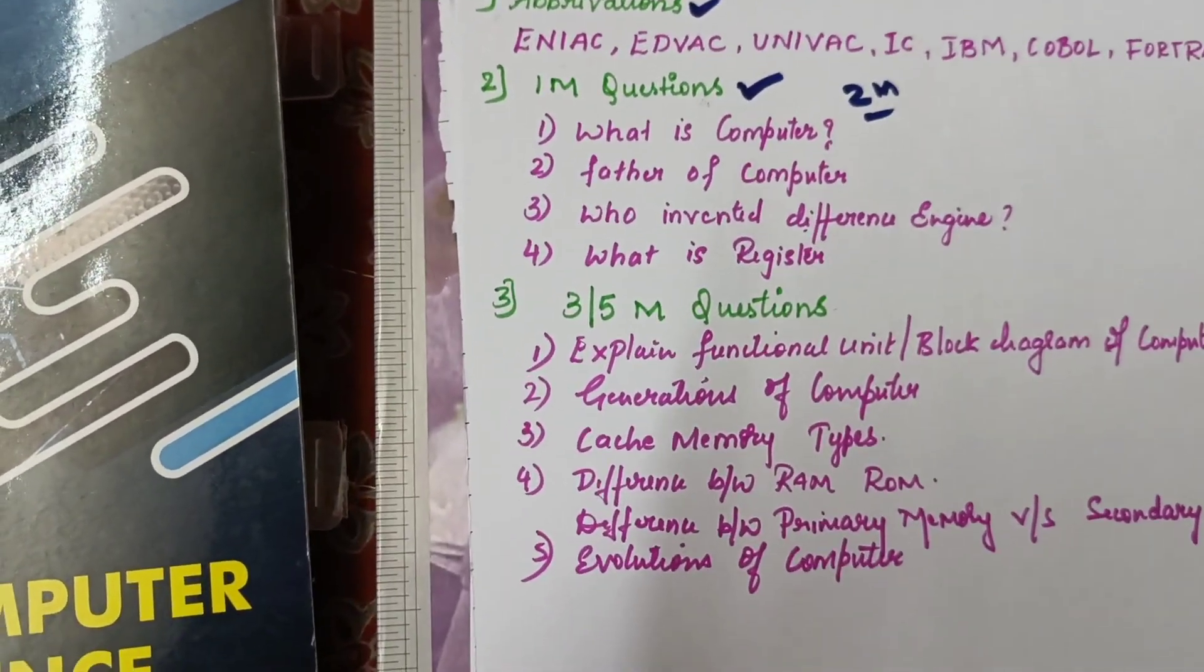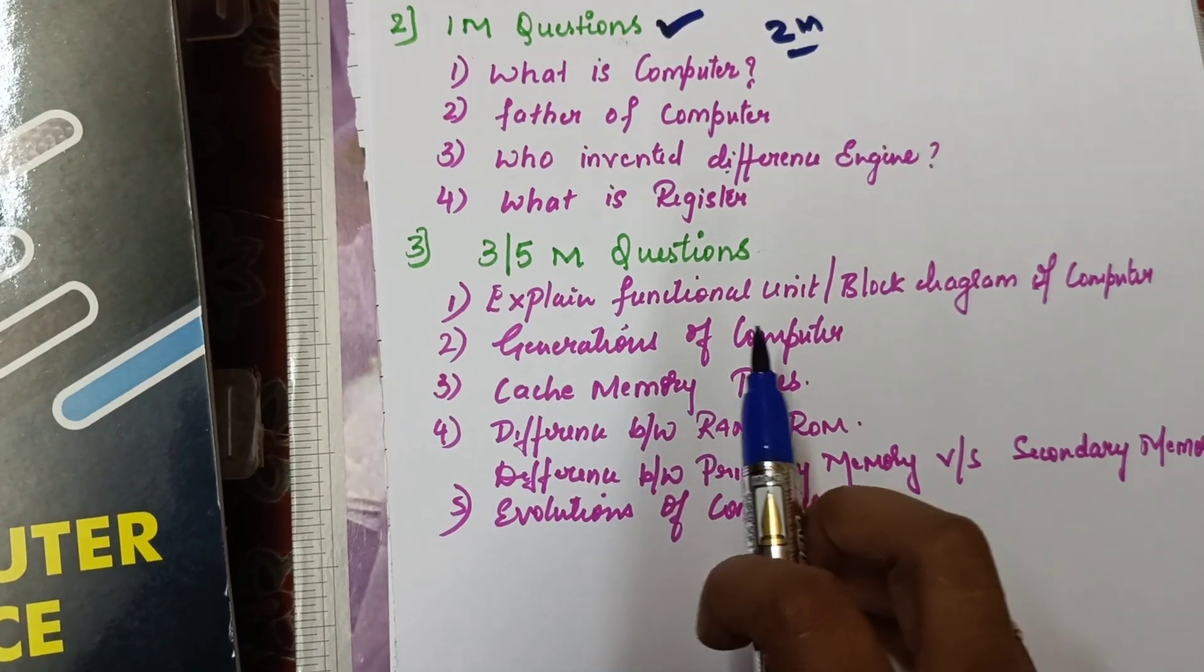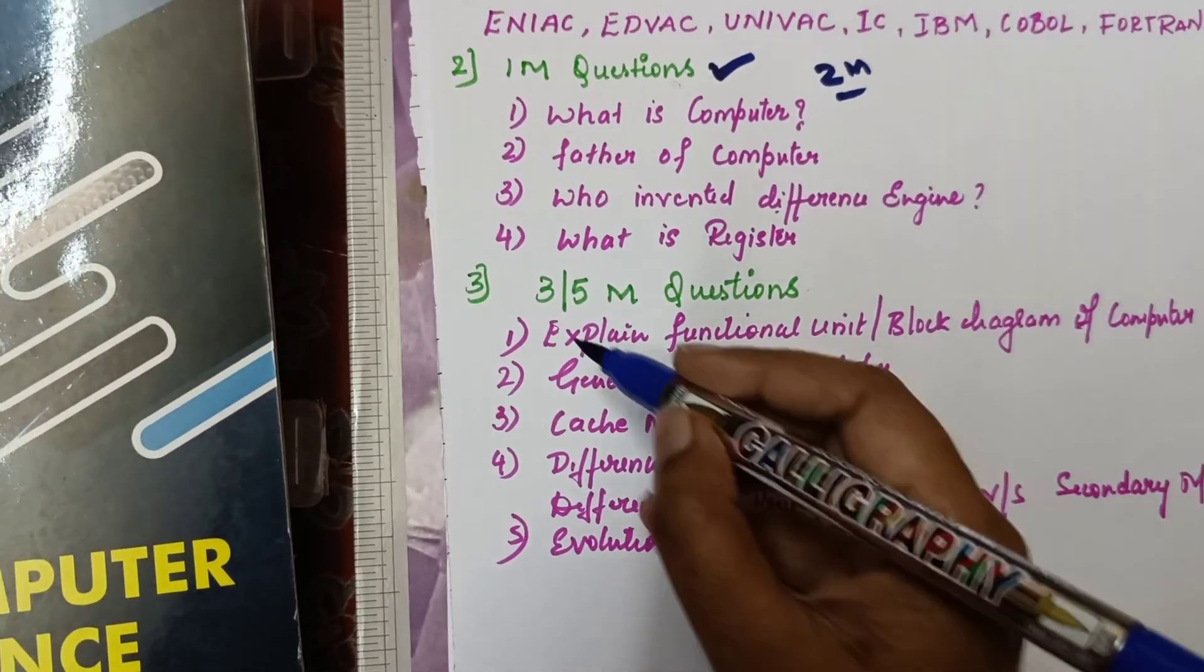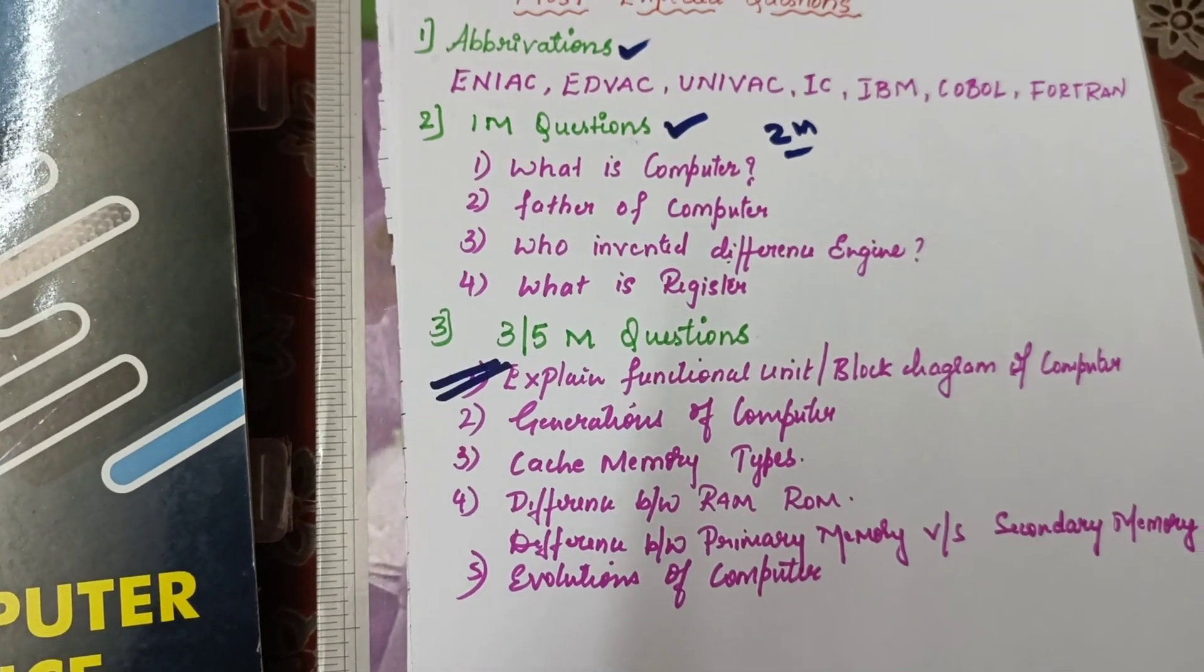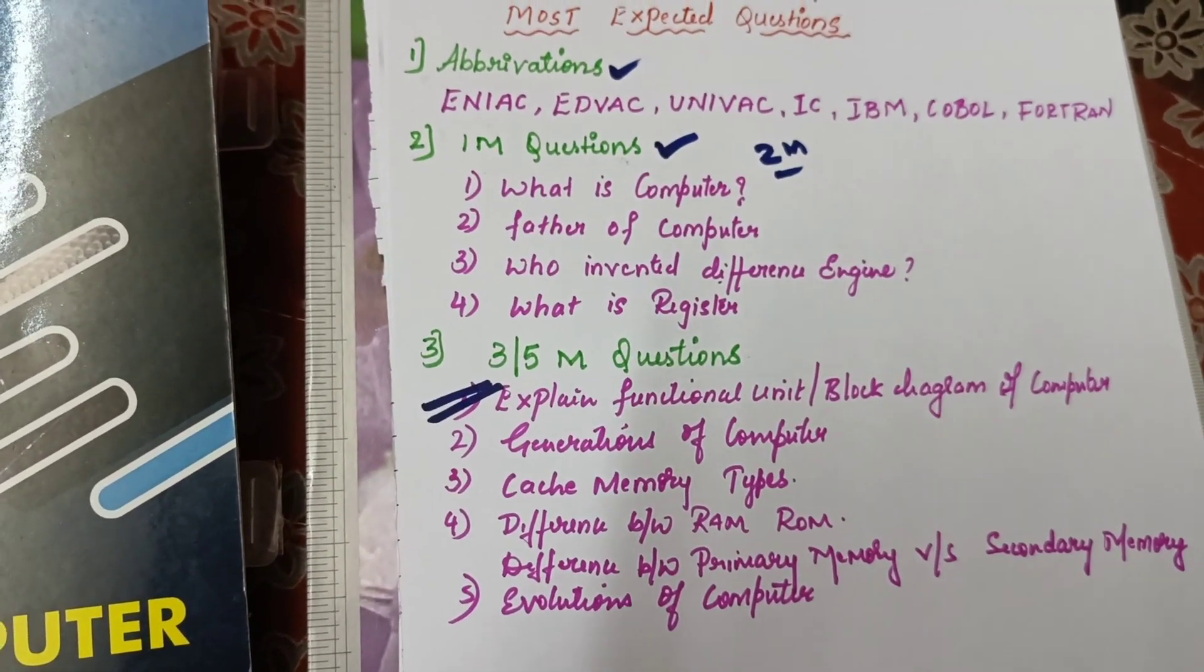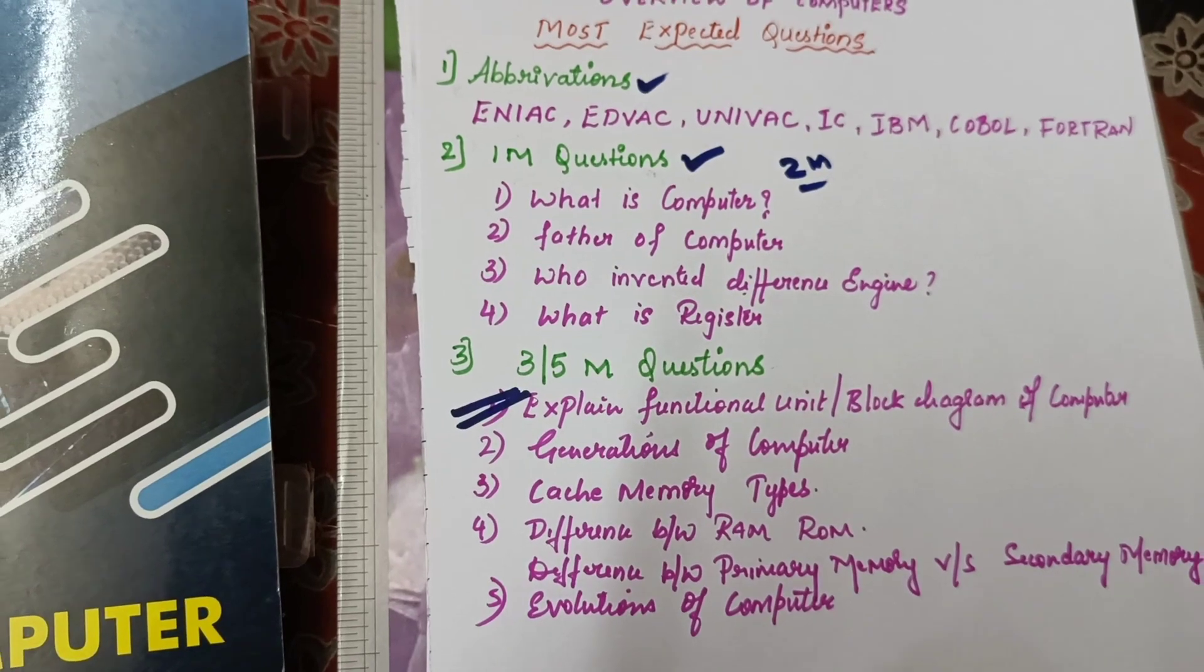Next, come to three to five mark questions. These questions that I'm writing here appear for three marks as well as five marks. Some questions come for three marks, some for five marks. Hopefully you're going to prepare for five marks. If you know five marks, you can reduce and write for three marks also.